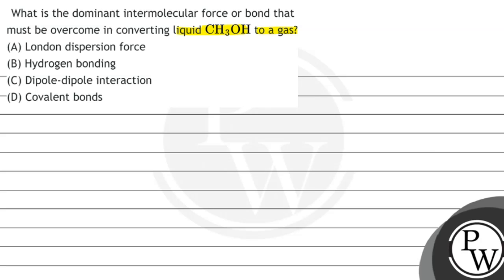Option A: London dispersion force. Option B: hydrogen bonding. Option C: dipole-dipole interaction. And option D is covalent bonds.